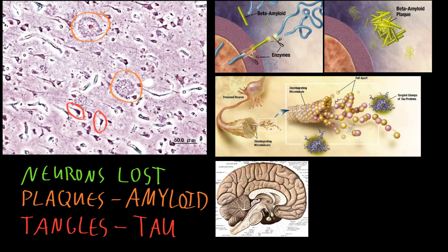Here an artist has drawn something going abnormal with processing of this beta-amyloid protein that leads to clumping to form these amyloid plaques. And here an artist is trying to show these neurofibrillary tangles inside diseased neurons and how tau protein can abnormally clump together inside the neuron. It's actually not totally clear yet whether these form and kill the neurons causing the loss, or if they are just a byproduct of some other process causing that neuronal loss.